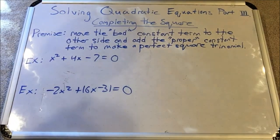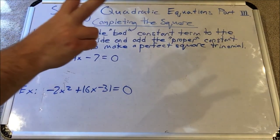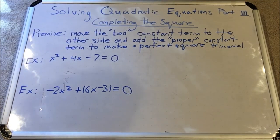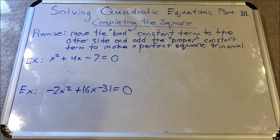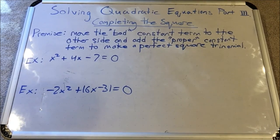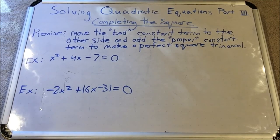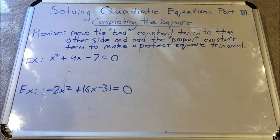Now here's our second method: completing the square. The premise of this method is that you have a bad constant term which doesn't allow you to factor — meaning I cannot find two numbers that multiply to the constant term and add to the coefficient of the middle term. So we move the bad constant term to the other side and add the proper constant term to make a perfect square trinomial. A perfect square trinomial is a trinomial that factors into the same binomial twice — like x plus 3 times x plus 3, which makes x squared plus 6x plus 9.